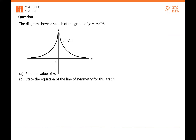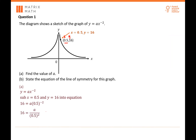So how do you find the value of A? Your graph gives you the coordinate (0.5, 16), which means 0.5 is the X value and 16 is the Y value. You sub in your X and Y values into your equation: 16 equals A times 0.5 to the power of minus 2. When you have negative indices, you bring this under your denominator — X to the power of minus 1 is the same as 1 over X. So A over 0.5 squared. A equals 16 times 0.5 squared, which gives A equals 4.